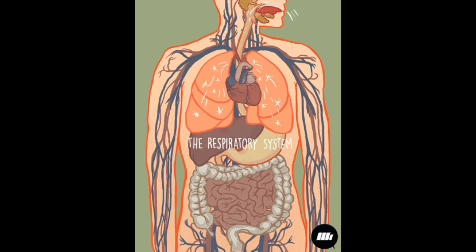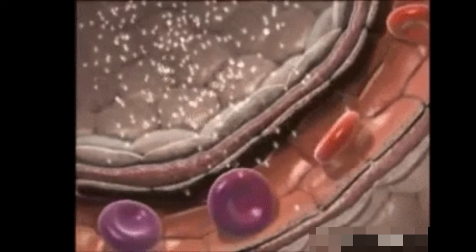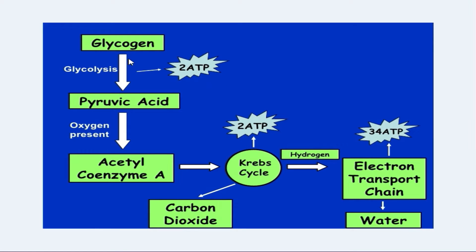The aerobic energy system involves the use of oxygen to produce ATP. The three stages of the aerobic pathway are: Stage 1, glycolysis; Stage 2, Krebs cycle; Stage 3, electron transport chain. Carbohydrates, or glycogen, are broken down into glucose, then into pyruvic acid. This is called glycolysis. Some ATP is produced.